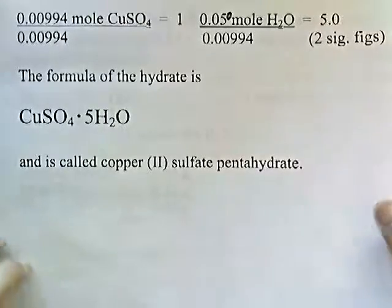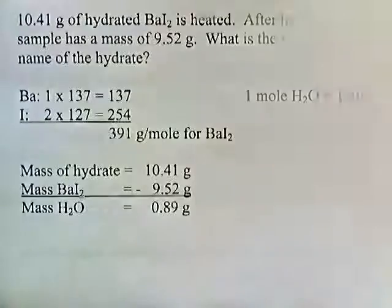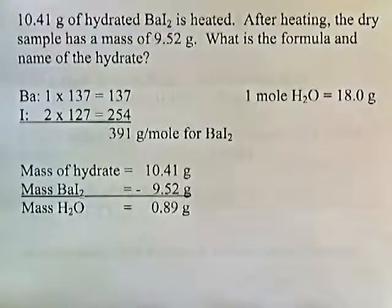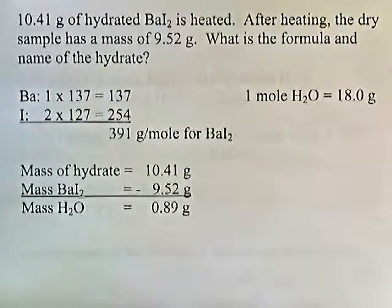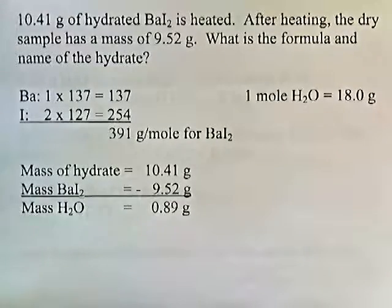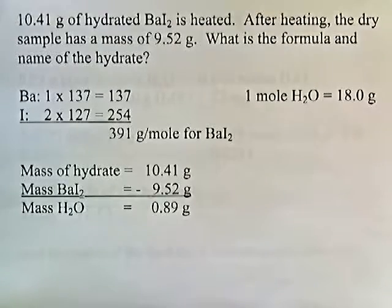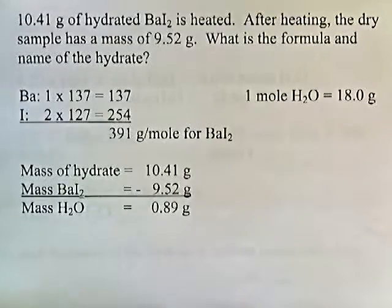Let's try another one. 10.41 grams of hydrated barium iodide is heated. After heating, the dry sample has a mass of 9.52 grams. What is the formula and the name of the hydrate?